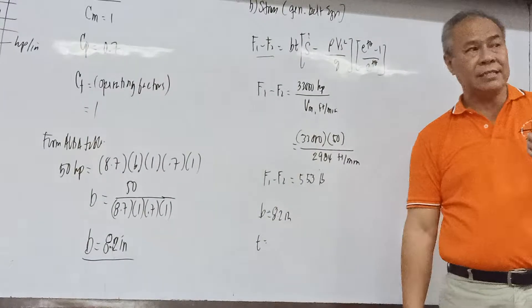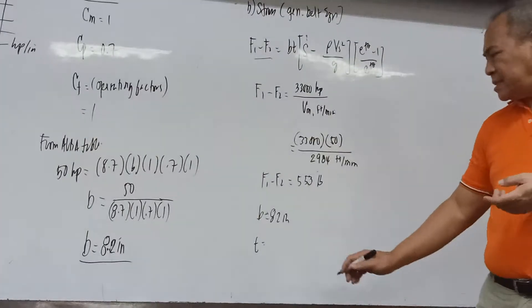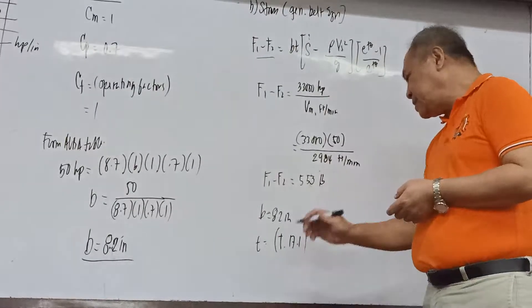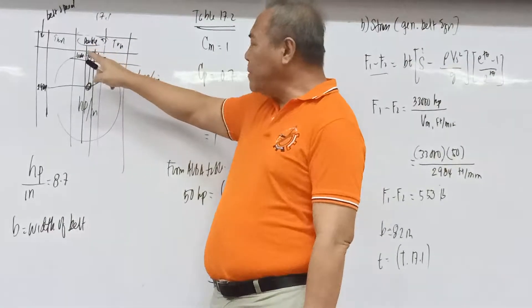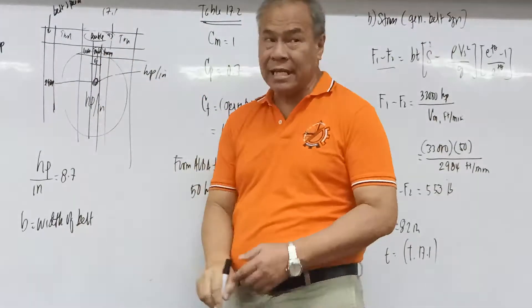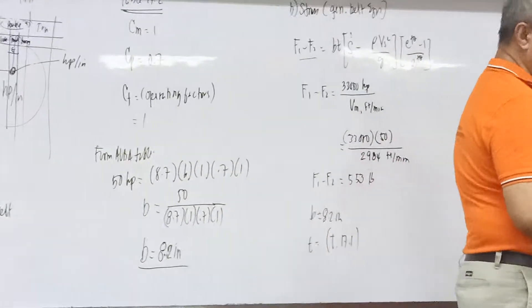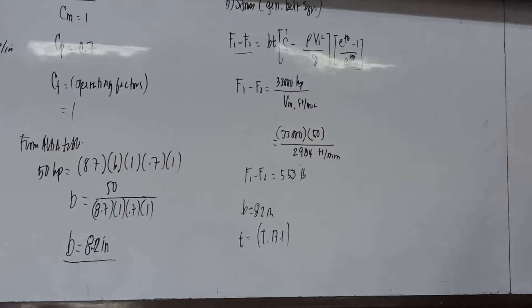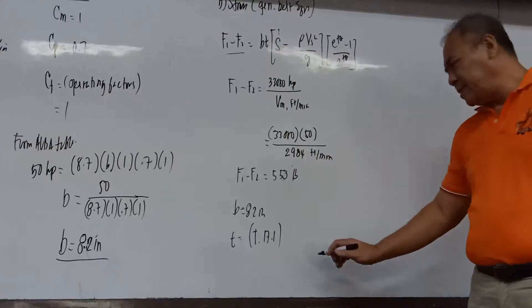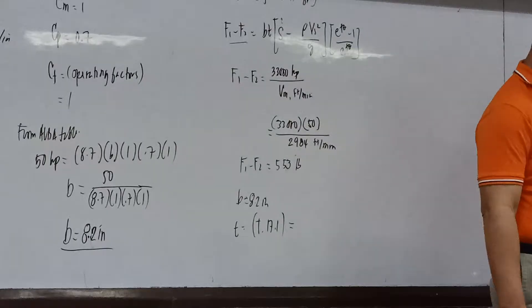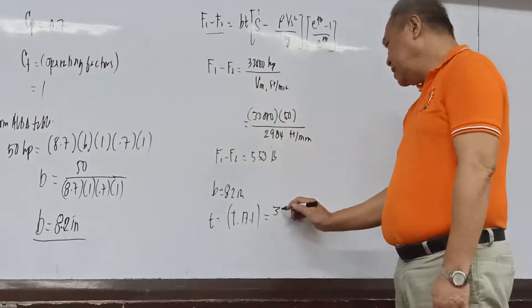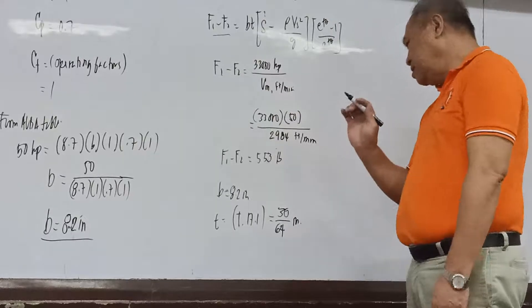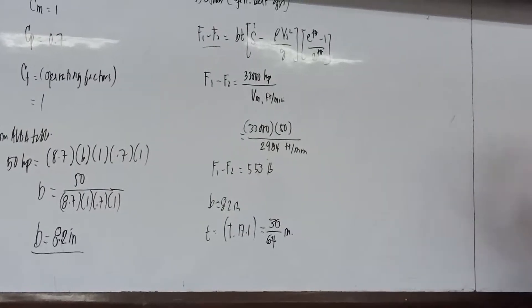For theta (angle of wrap) on the small pulley: θ = π - (D - d) / C = π - (56 - 9.5) / 160. This gives θ ≈ π - 0.29 ≈ 2.85 radians (approximately 2.7 radians). Since both pulleys use the same material, the design is based on the small pulley.